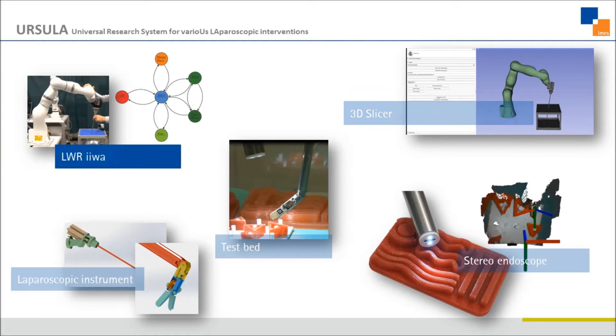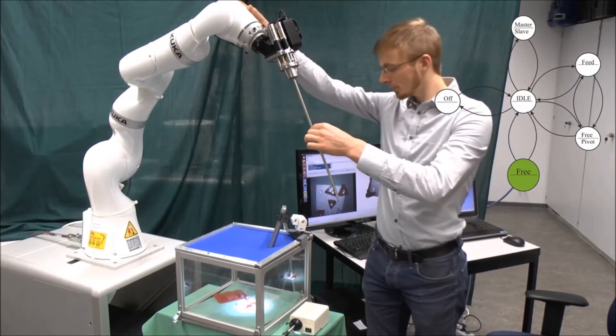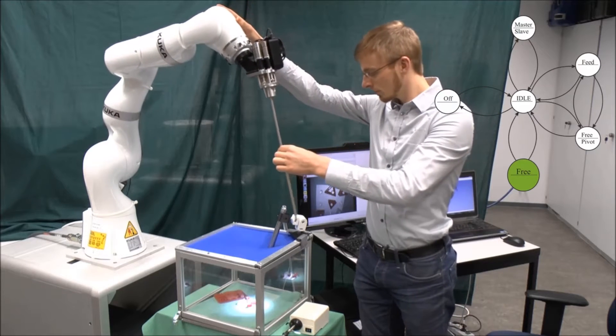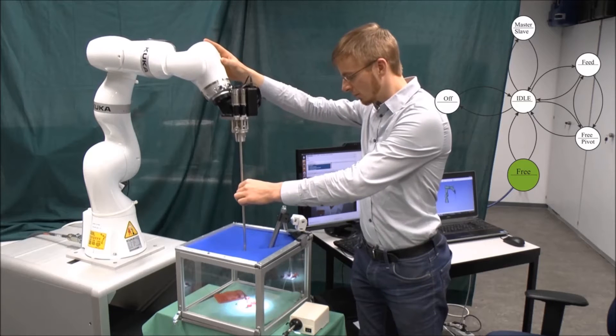For the use of the lightweight robot in robot-assisted surgery, we developed the state machine with different control modes. First, we would like to show a control mode where the user touches the robot and moves it freely in six degrees of freedom. This control mode can be used to insert the instrument into the patient phantom.